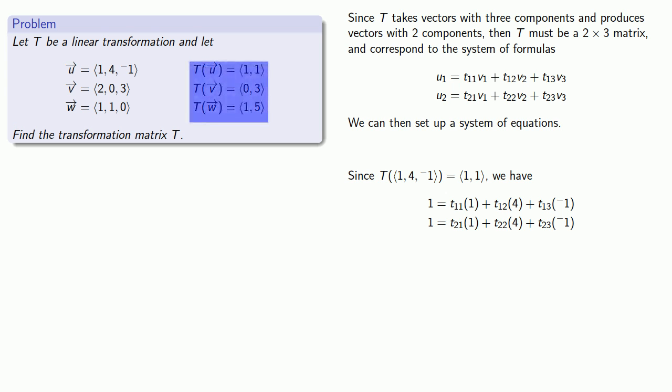And in this case, we know what the transformation does to the vector (2, 0, 3). It gives us the vector (0, 3), and so this gives us another set of equations.